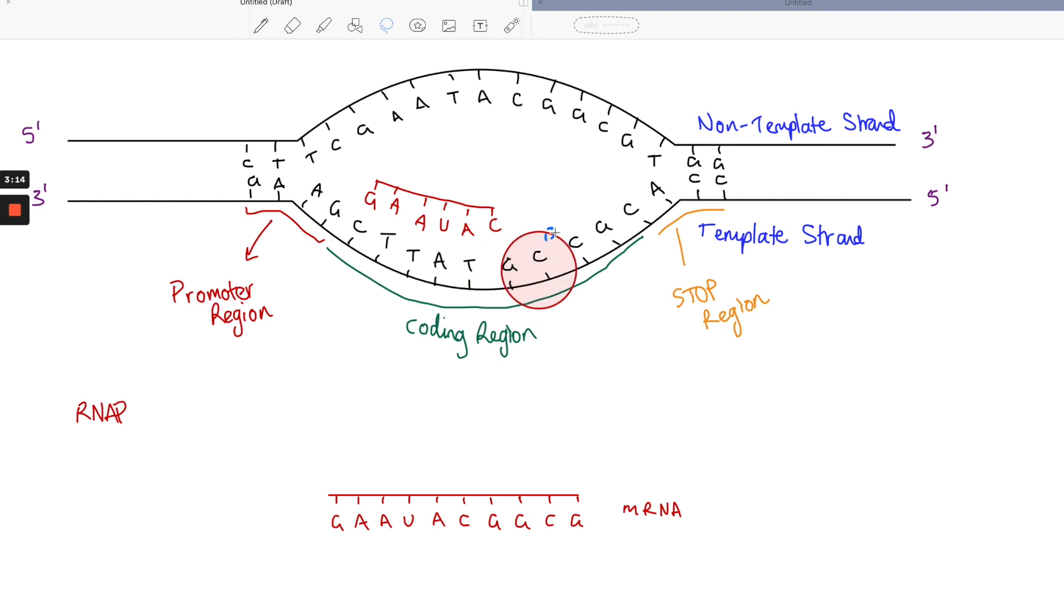It'll make its way all the way to the end. When it finally gets to the stop region, it'll be told to basically jump off, so it'll remove itself. The mRNA molecule will also jump off - you'll now have a free mRNA. We can get rid of all of this because that would have jumped off, and the DNA would then re-hybridize and the transcription bubble would close.